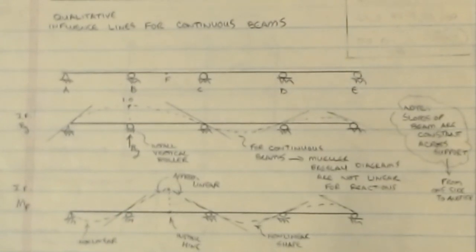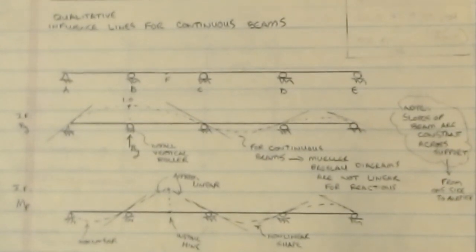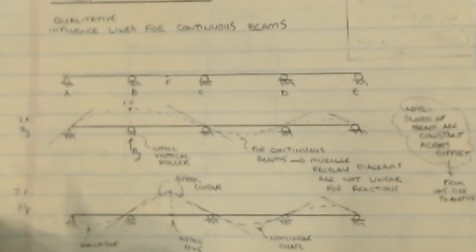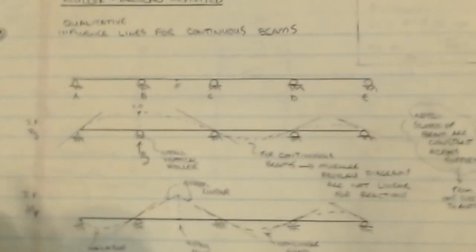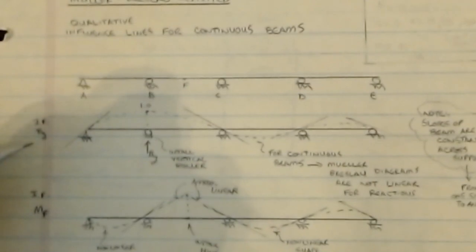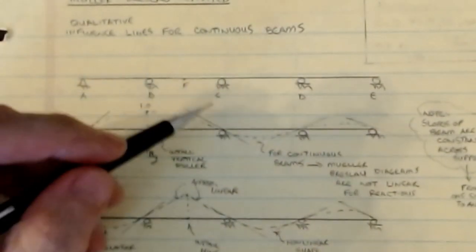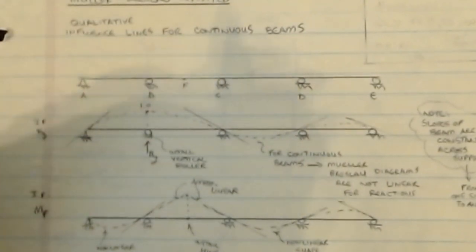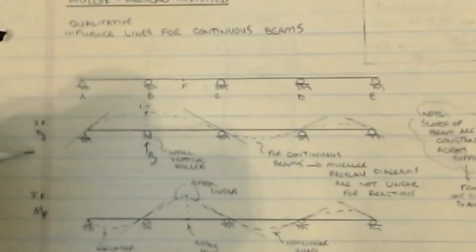Qualitative influence lines can quickly help us figure out load patterns. In statically determinate structures we can get numerical values, but the real power of this method shines with indeterminate structures. Let's look at a continuous beam with four spans — points A, B, C, D, E, and a midpoint F. Suppose we want the influence factors for reaction BY, the vertical reaction at B.